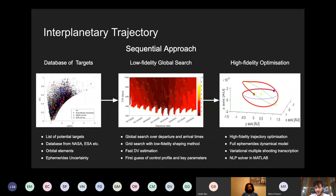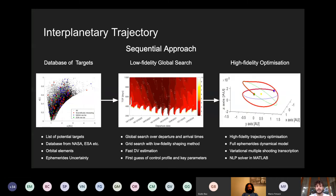After this step, we perform a low-fidelity global search. We look over the departure and arrival times and perform a grid search. With grid search low-fidelity shaping methods, we try to understand the key parameters of trajectories to reach these small bodies — for example, a quick estimation of the delta-V involved, how the control profile would look, and some other key parameters for the flyby. This is still ongoing work.